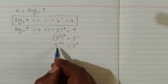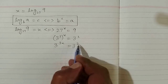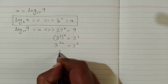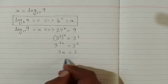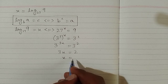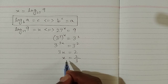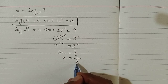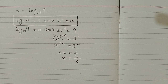Since the bases are the same, the powers will be equal, so we have 3x is equal to 2, which gives x is equal to 2 upon 3. So x equals 2/3 is the required solution of the given equation.